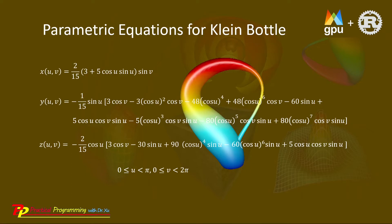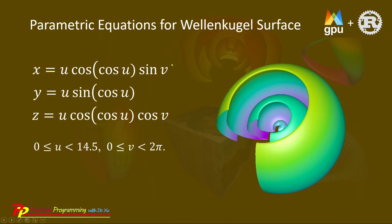These are parametric equations for the clang-bottle. These equations look very complicated. The parametric variable u takes the value in the range of 0 to 2pi. Here are the parametric equations for the wailing-corder surface, where u takes the value from 0 to 14.5, and v takes the value from 0 to 2pi.